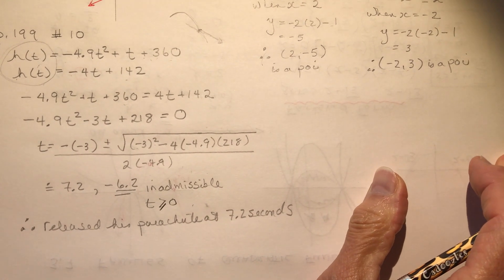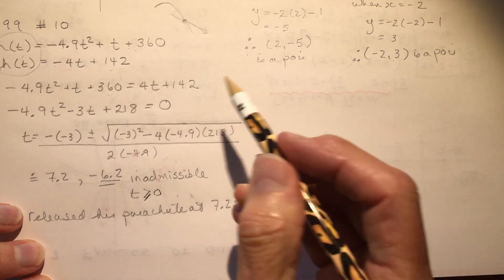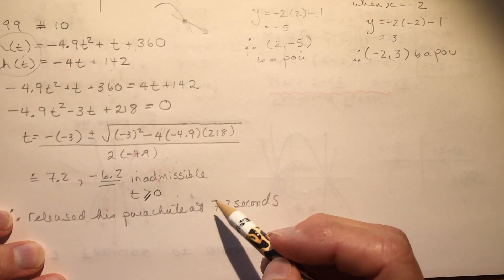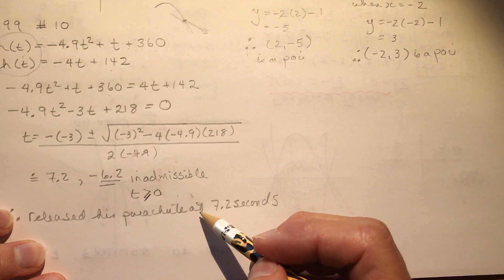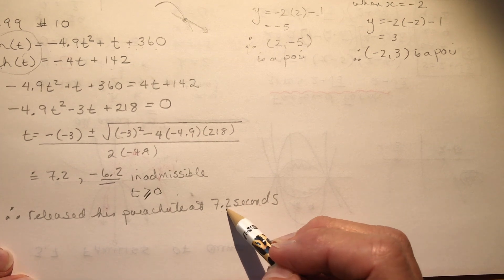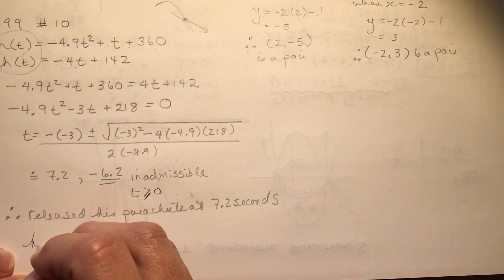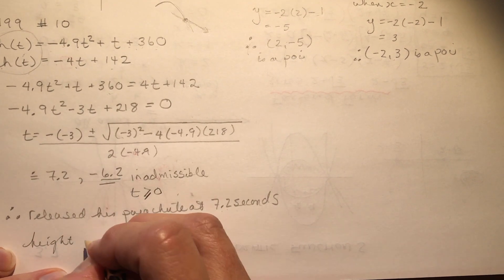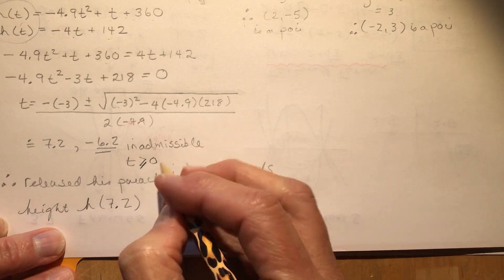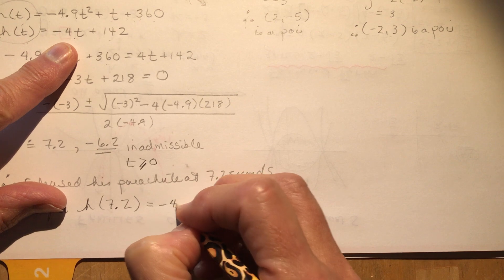Okay, so let's pretend this wasn't a word problem. It was just an equation where I gave you this problem and this line and asked you for the point of intersection. So this tells you when he released his parachute. If you wanted to know what height it was, then you would plug that back in here, right? So let's do that just for fun here. The height would be h at 7.2. So you plug that back in. Again, I would choose the linear equation just because it's a much easier calculation.